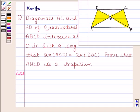We are given that area of triangle AOD is equal to area of triangle BOC. Let us name this as equation number one.